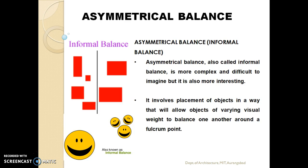Asymmetrical balance, also known as informal balance, is more complex and difficult to imagine but is also more interesting. It involves placement of objects in a way that will allow objects of varying visual weight to balance one another around a fulcrum point. As you can see in this figure, there are a number of objects on one side and two bigger objects on the other side, so these four smaller ones are balanced by these two bigger ones. Similarly, in the second figure we can see that three small smiley faces are balancing a huge smiley face on the other side.